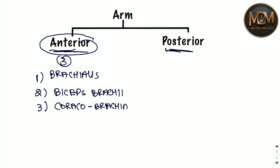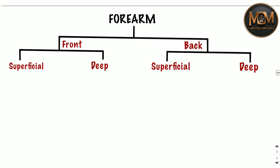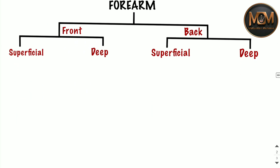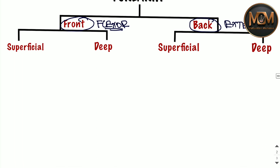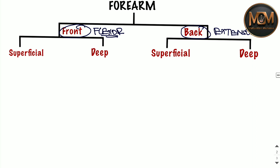Those are the three muscles of the anterior compartment of the arm. Now the posterior compartment has only one muscle: triceps brachii. Now let's talk about the fifth region, the forearm. In the forearm we have two compartments — the front compartment, which is also called the flexor compartment, and the back compartment, also called the extensor compartment.